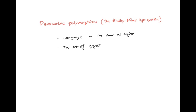What we have now is that the set of types is given by the formation rules. We have the type int, we have the type bool, we have function types, we have product types, and now we've got something new: we've got type variables.